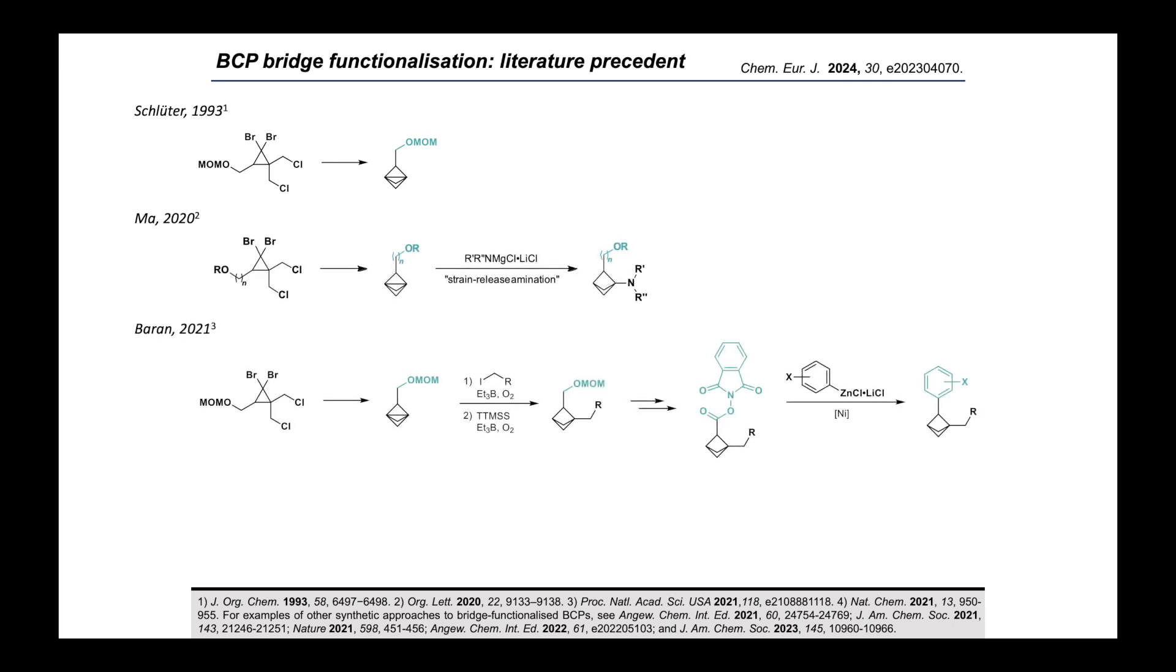The Baran group themselves made a further contribution to the field in 2021, in which they took Schlüter's propellane, opened it with alkali iodides under triethylborane initiation, and then showed a range of manipulations at both the bridge and bridgehead sites to access diverse 1,2-difunctionalized BCP products. One of the most interesting transformations they reported was conversion of the hydroxymethyl functionality into a redox-active ester, followed by decarboxylative radical Negishi coupling. This chemistry, which enables the installation of various benzenoid aromatic rings, was an important advance since it represented the first example of divergent synthesis directly off the BCP bridge positions.